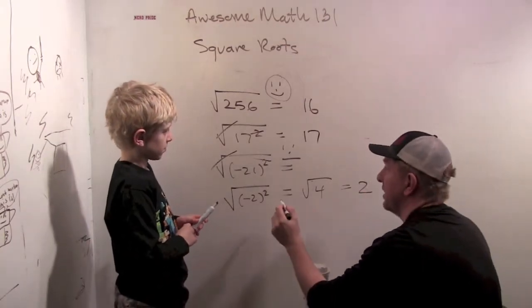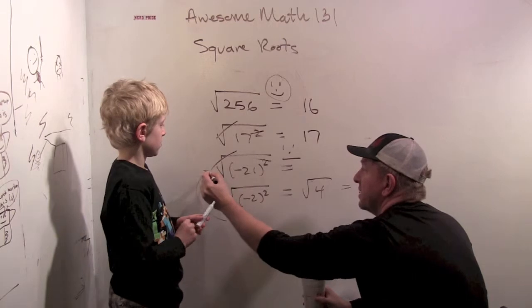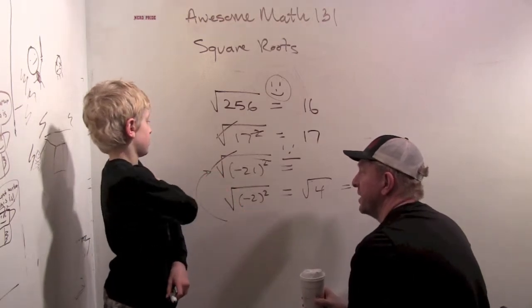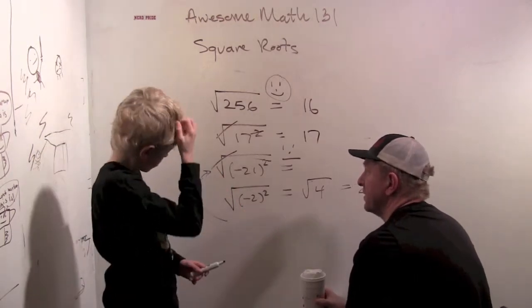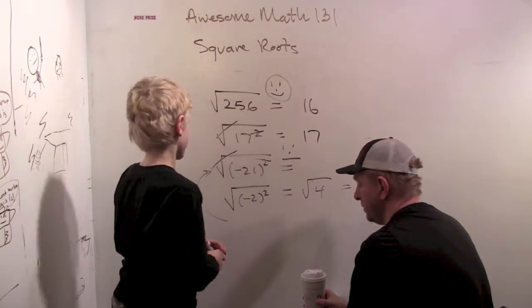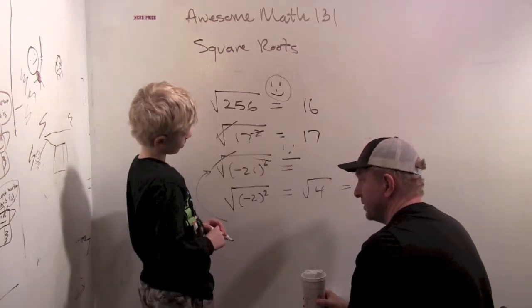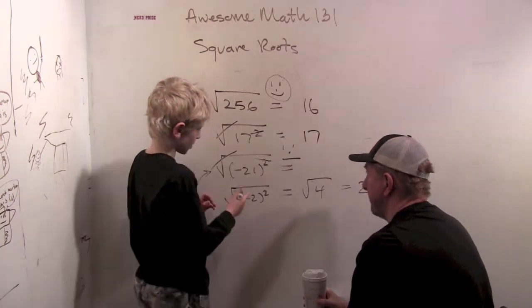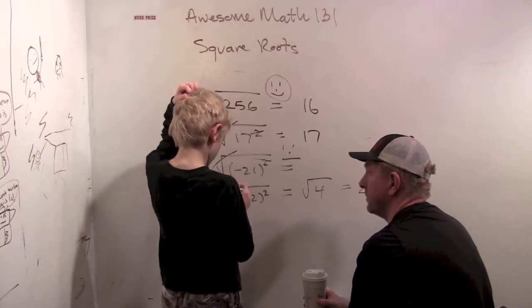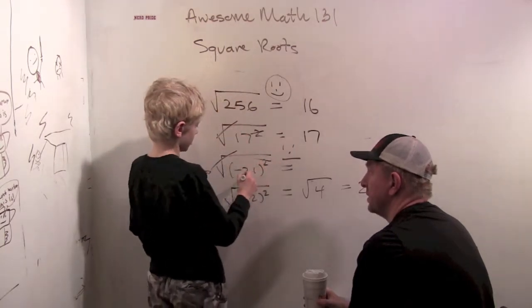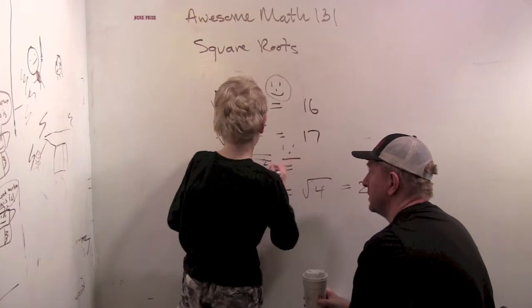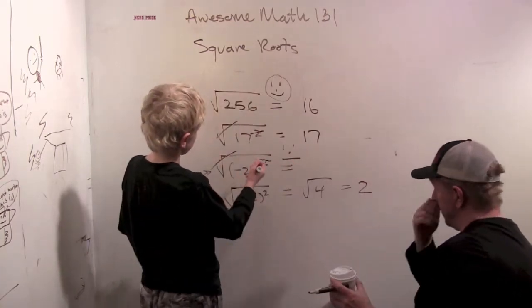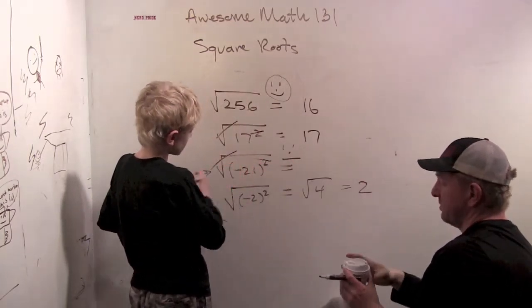So let's go back up a level to here and find the square root of minus 21 squared. This should be the same. So we wouldn't need to.